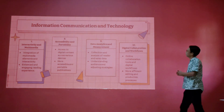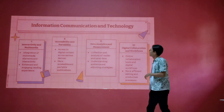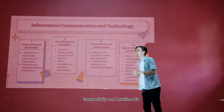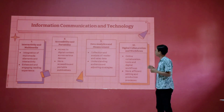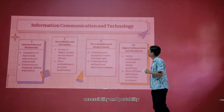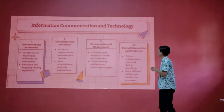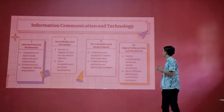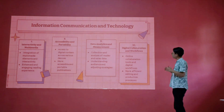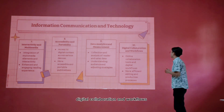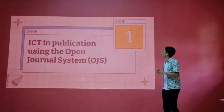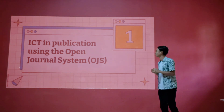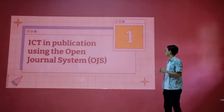The seventh point is interactivity and multimedia. The eighth is accessibility and mobility. The ninth is data analysis and results. And the last point is digital compression and work problems.